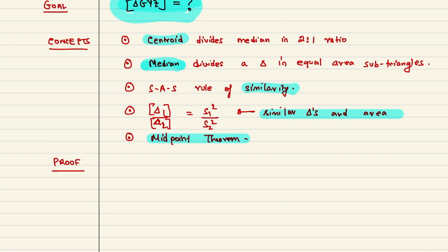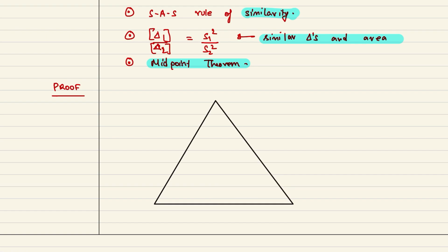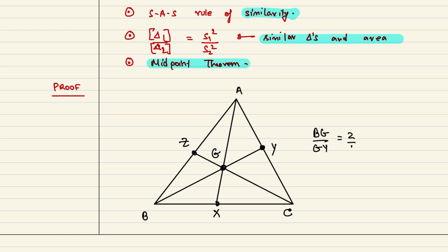Okay, so the first thing that we will need is that the centroid divides the median into two is to one ratio. So let me draw the picture one more time. This is A, this is B, this is C and you draw the median, the three medians, like this. And as I told you before, the three medians pass through a single point. Let's call this X, let's call this Y, let's call this Z. Then this point is called the centroid. It's a very special point. And BG is to GY is two is to one. Similarly, CG is to GZ is two is to one. And AG is to GX is two is to one. So all of these ratios are two is to one.